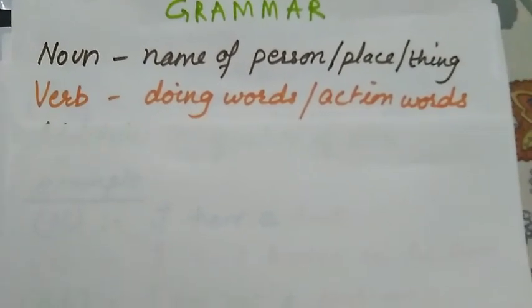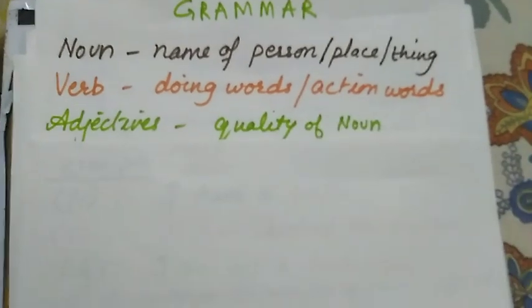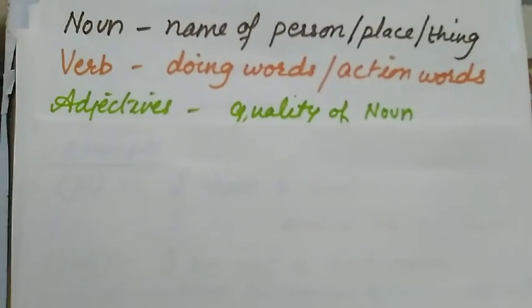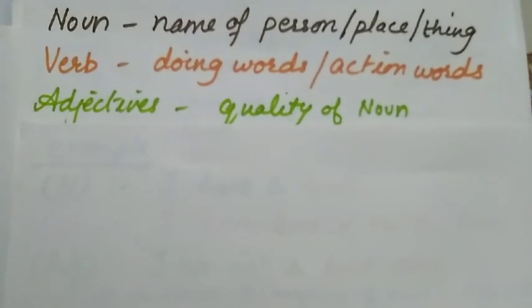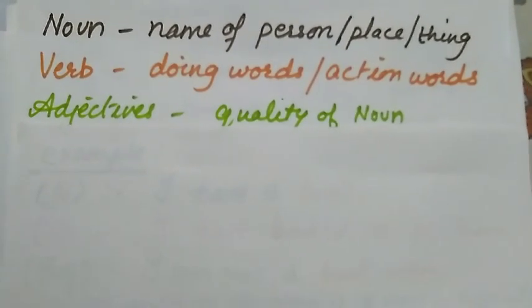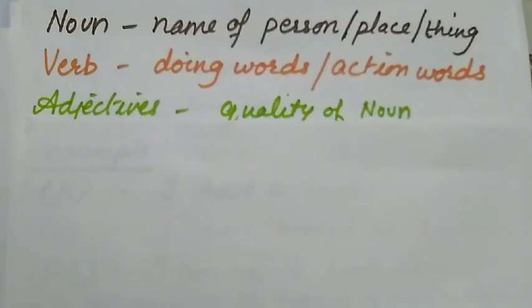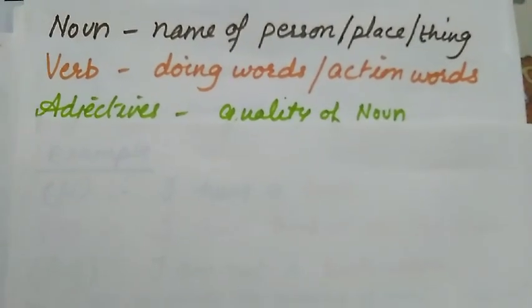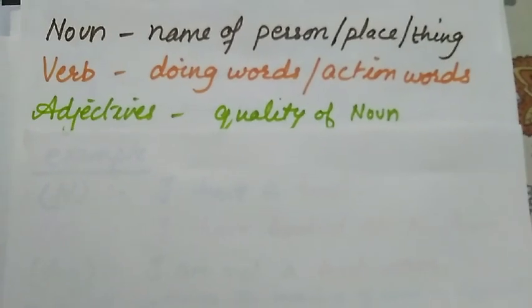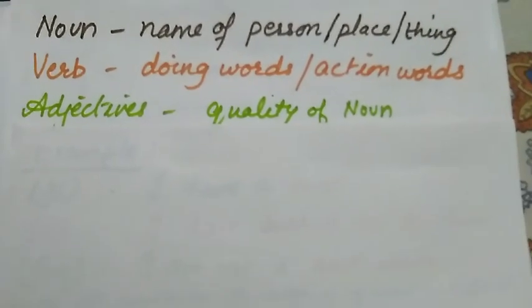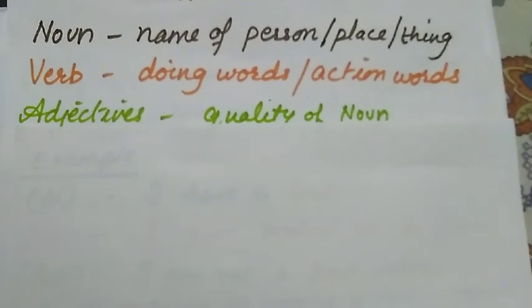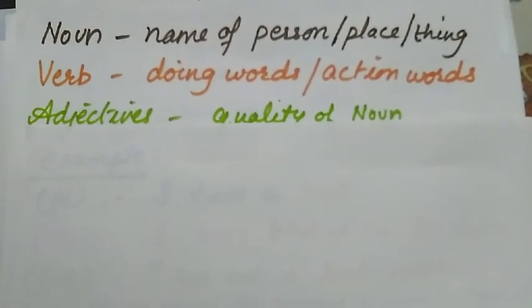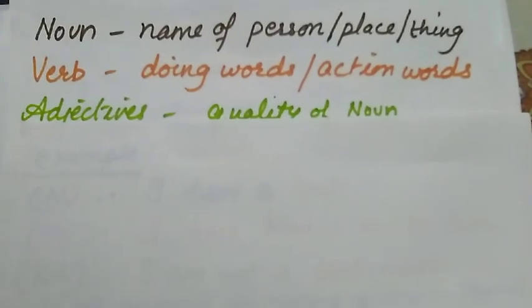And then what is adjective? Adjectives are the words which describe the quality of a noun. Now you know that these three things - noun, verb, and adjective - are different from each other.